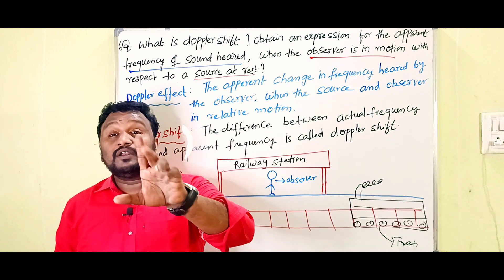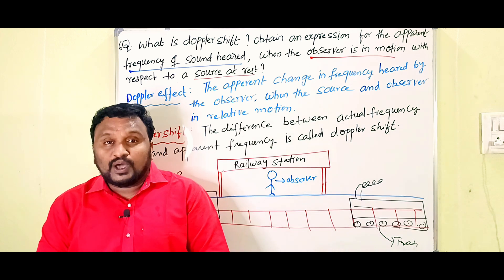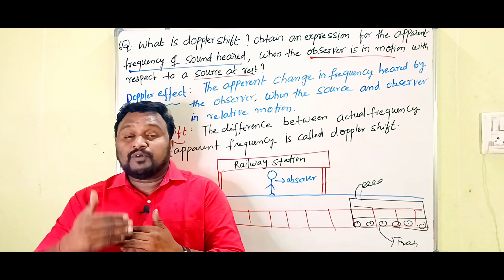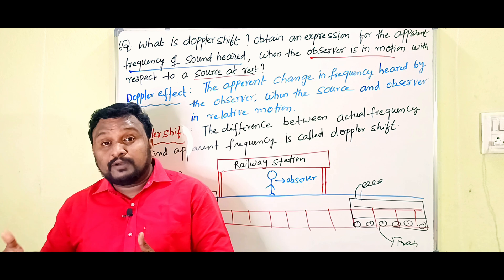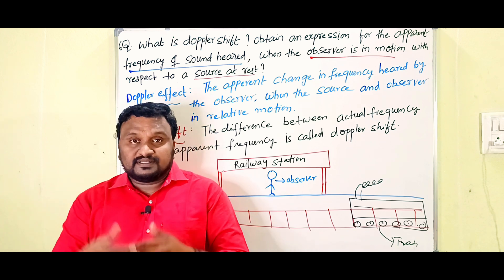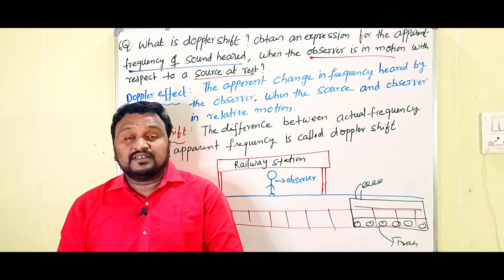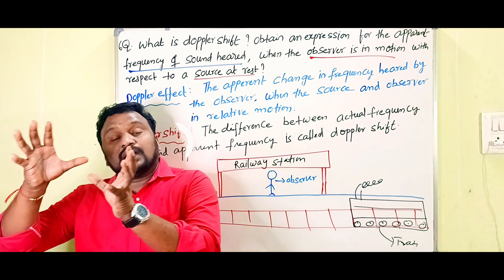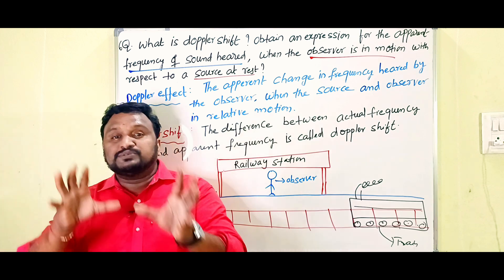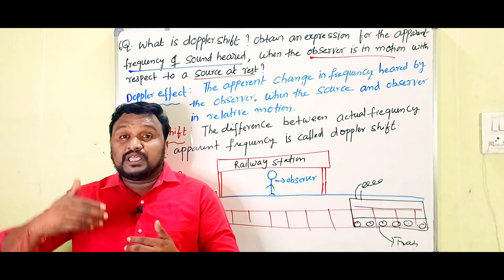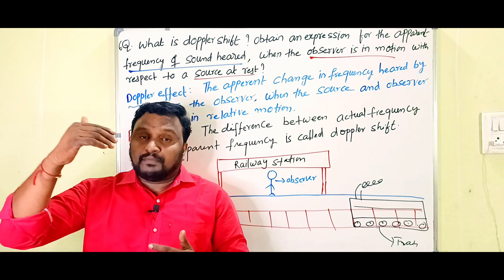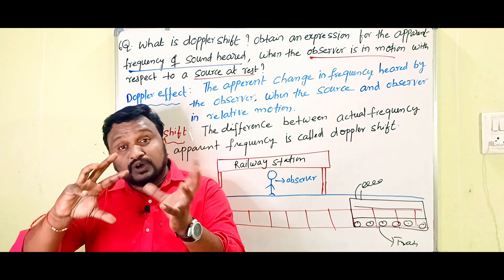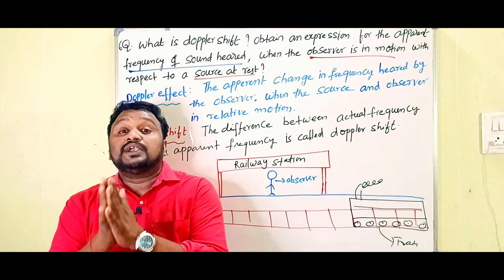Now, what is meant by Doppler shift? The difference between actual frequency and apparent frequency is called Doppler shift. There is some difference between the actual frequency produced by the source and the apparent frequency observed by the observer.